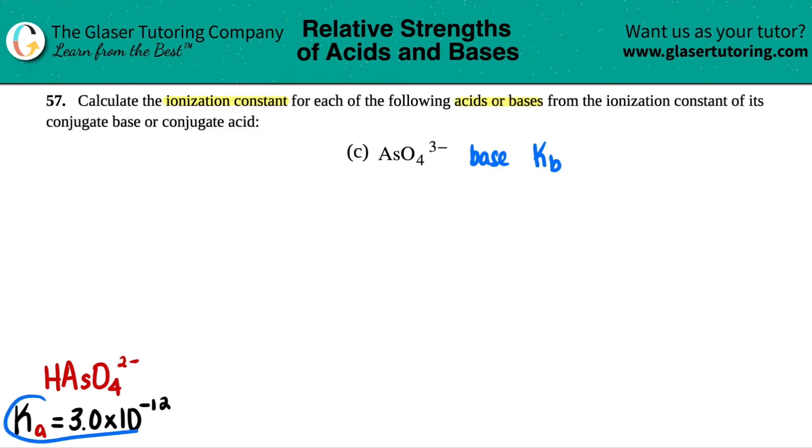So I went to the back of the chapter, I saw that, or the back of the textbook, the Ka value for the corresponding conjugate acid is 3.0 times 10 to the negative 12. So in essence, we just have to turn that Ka value into a Kb value.